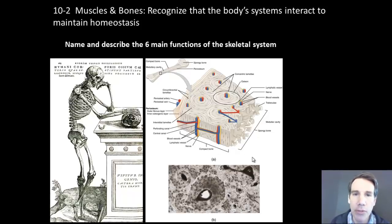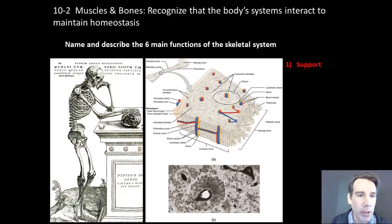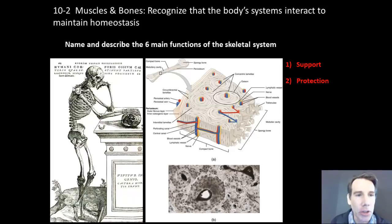Let's look at those six major functions of the skeleton. As we saw before, support — your backbone and your legs and so forth are supporting the body, helping you to defy gravity. Also, protection: your skull and your rib cage, for example, protect the organs, like your brain, your heart, your lungs.